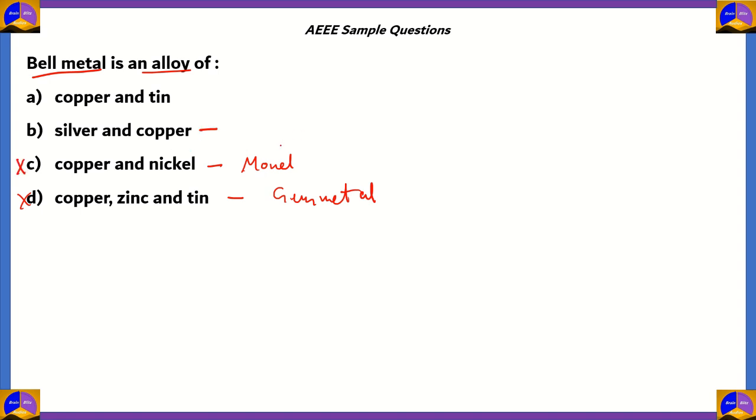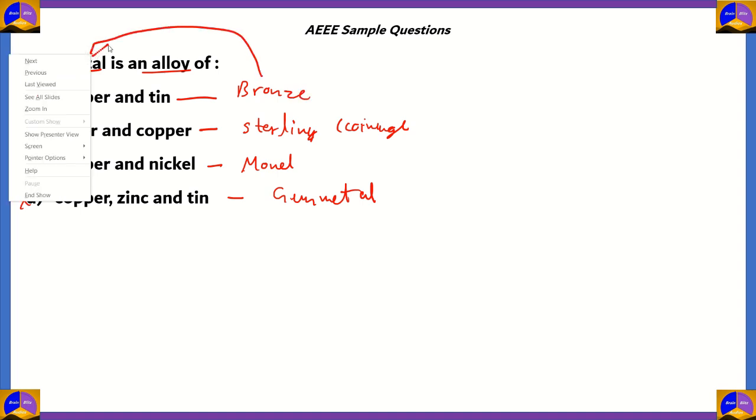Silver and copper, when they are mixed together, they form an alloy called sterling, and this is used in coinage in earlier times. So option B is incorrect. The correct answer is option A, copper and tin. Copper and tin form bronze,